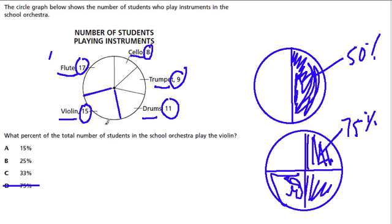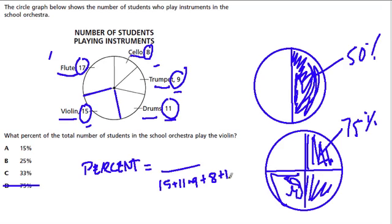So, what's going on here is that the percent, and in general, a percent is just going to equal what you have out of the total, out of 100. So, here, the total amount is going to be our denominator, which is just 15 plus 11, I'm just going to add up the amount of people in each group, plus 9, plus 8, plus 17. And, out of that total, 15 play a violin.